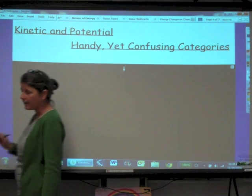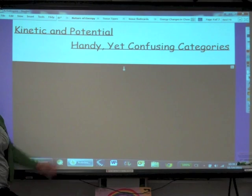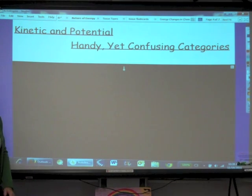Now, we have a couple of categories of energy that help us to kind of place these different forms. So we've got kinetic and potential. And these aren't forms of energy. These are categories. And they're very handy. But sometimes it can be confusing because we think of kinetic and potential as being forms of energy. But really, they're not.